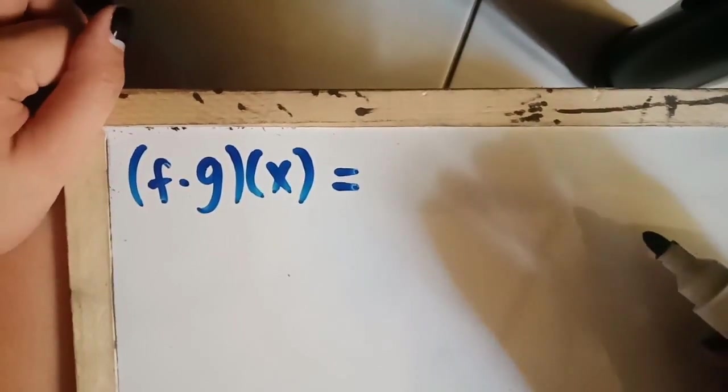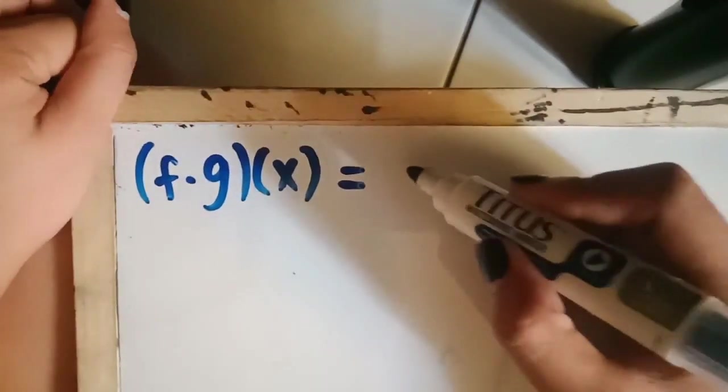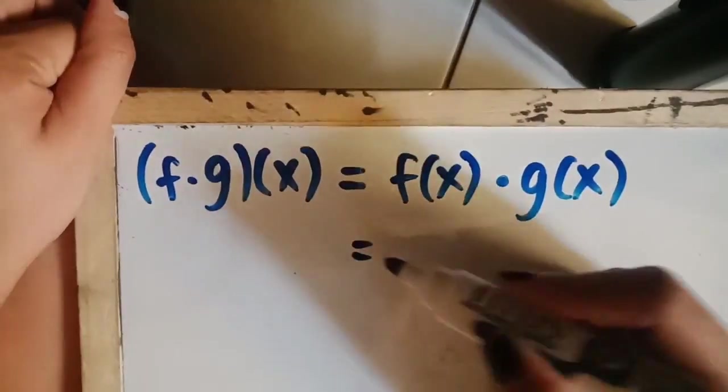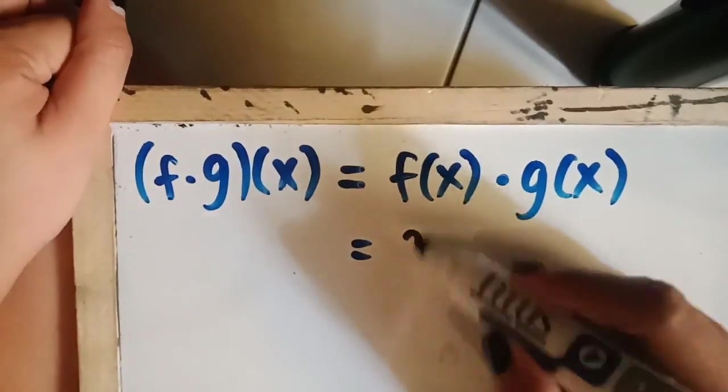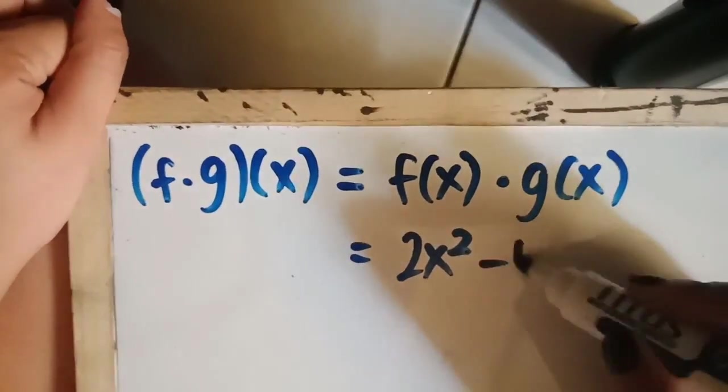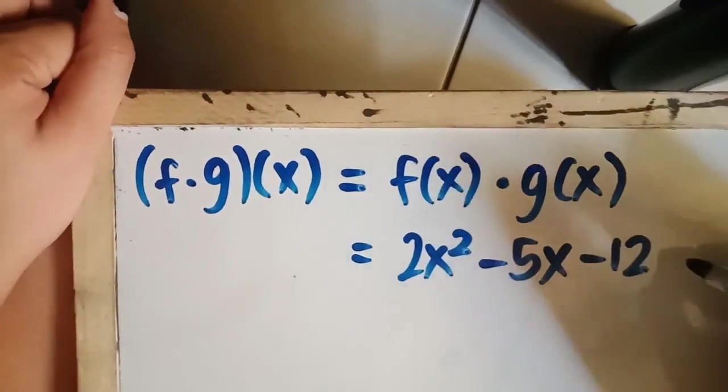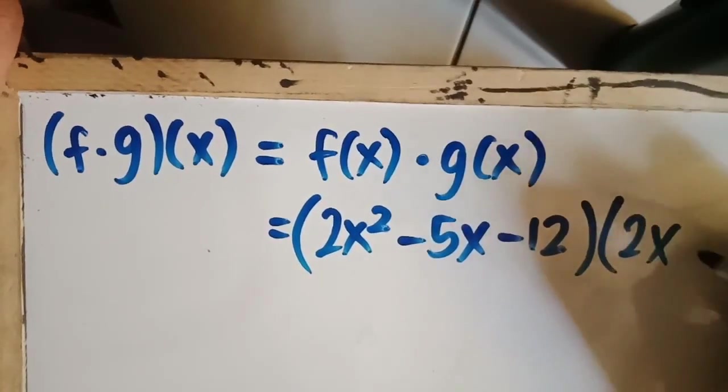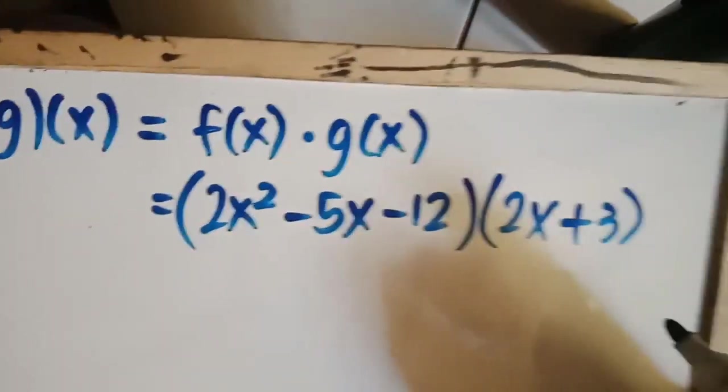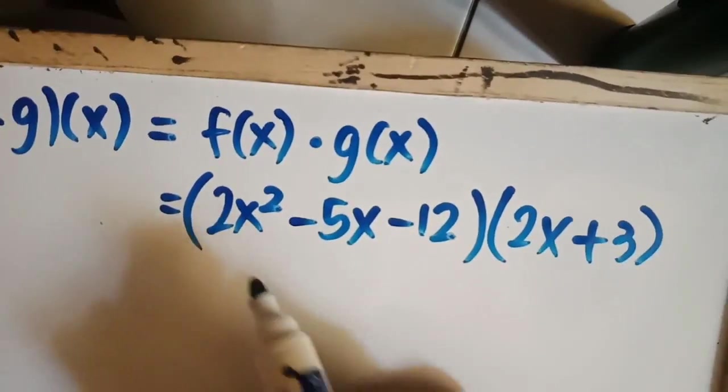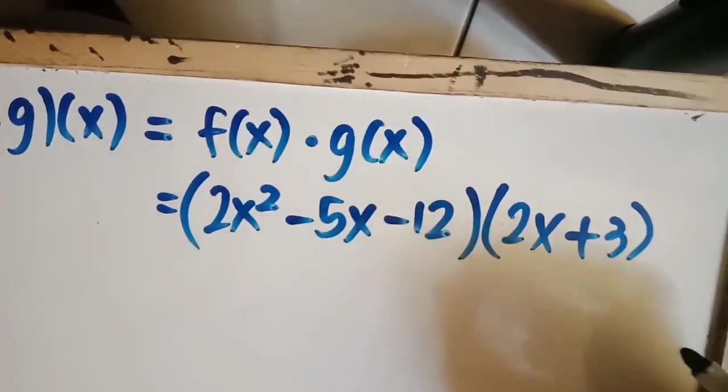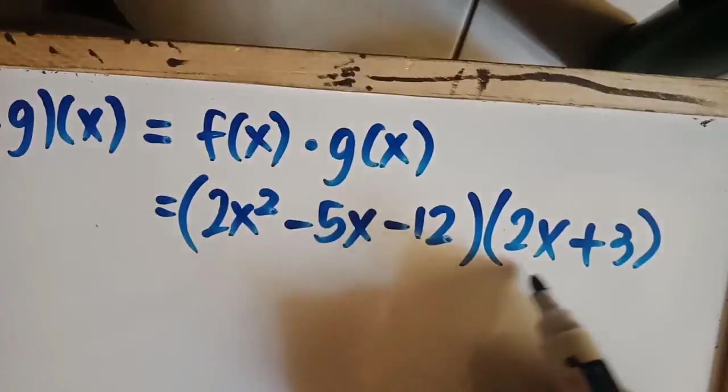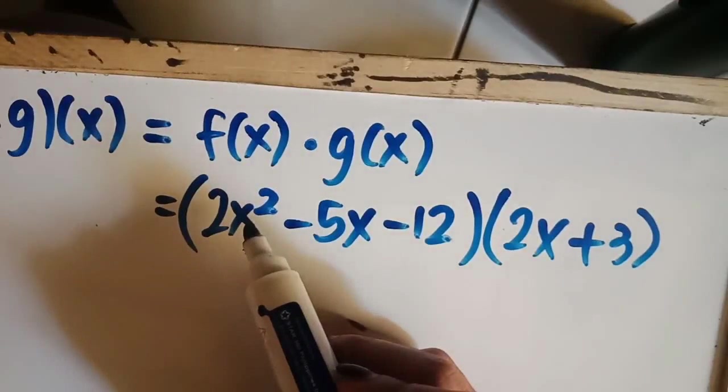So we have f times g of x. Again, this is the same with f of x times g of x. For the given, we have f of x that is 2x squared minus 5x minus 12 times our g of x equals 2x plus 3. So in this case, since we have a trinomial and a binomial, the FOIL method is not applicable. So all we have to do is to distribute each term on the trinomial. So let's start.